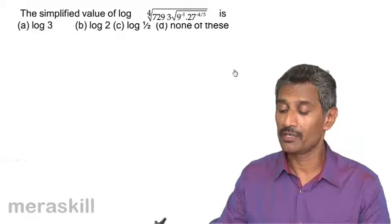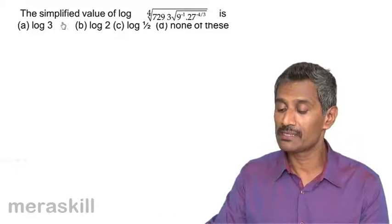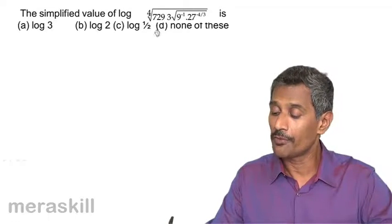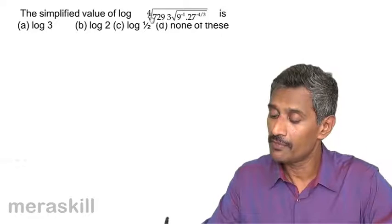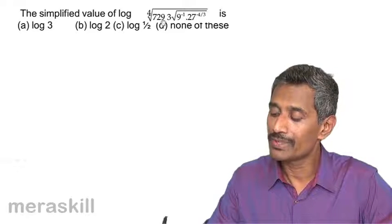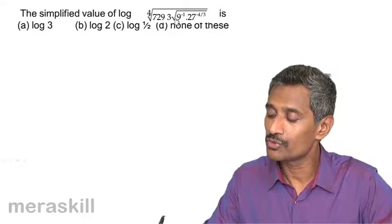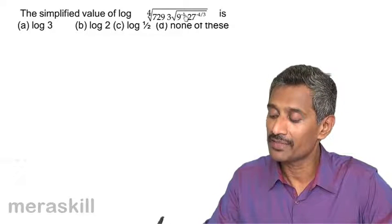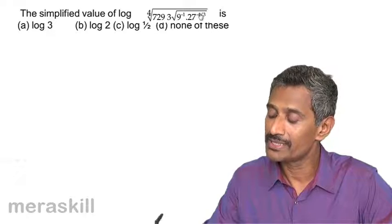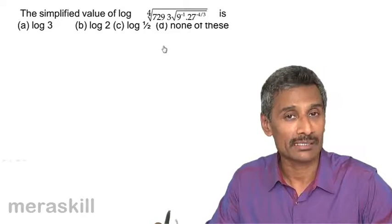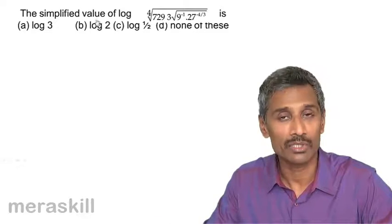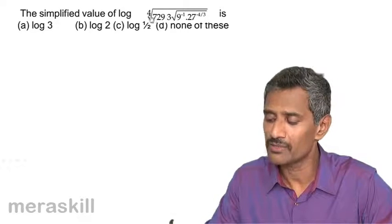Here we have the simplified value of log of the fourth root of 729 into the cube root of 9, raised to minus 1, into 27 raised to minus 4 by 3. This is quite similar to the previous one.